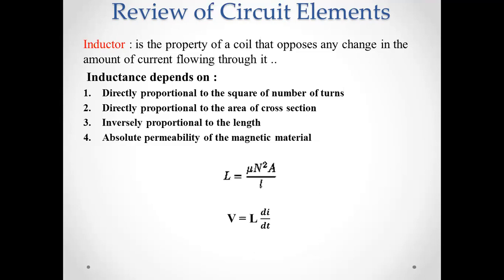Inductance depends on several factors: it is directly proportional to the square of the number of turns N, directly proportional to the area of cross-section A, and inversely proportional to the length of the coil L and the absolute permeability of the magnetic material. The equation is L equals mu into N-squared times A divided by L.